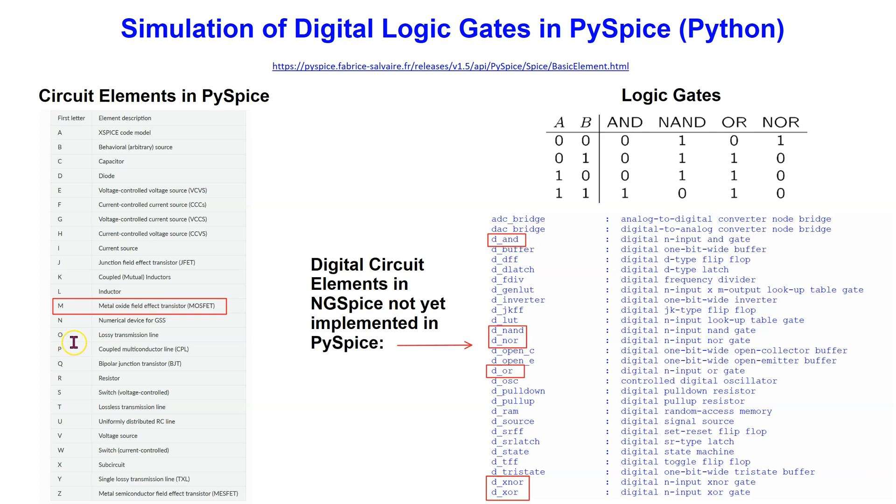This list includes transistors such as Metal Oxide Field Effect Transistor or MOSFET. However,